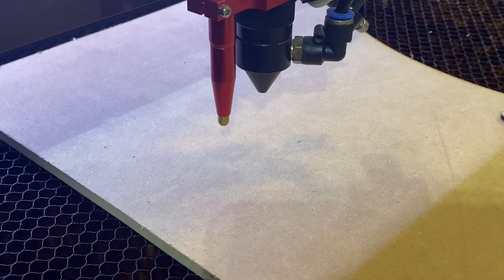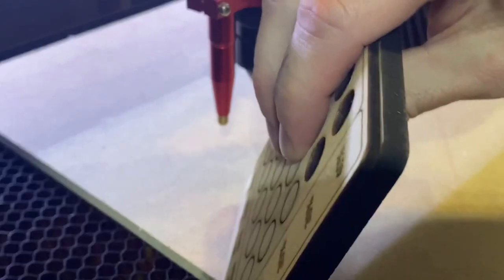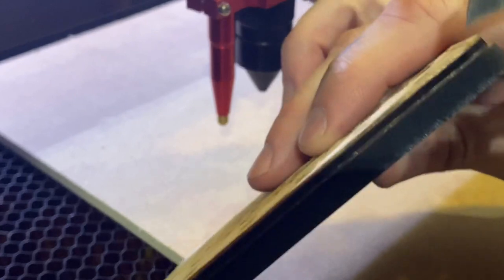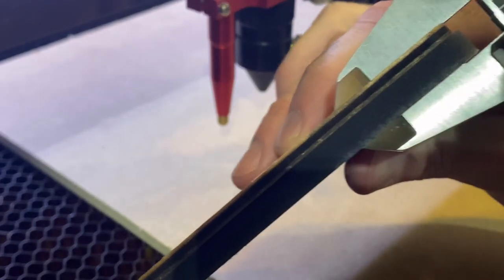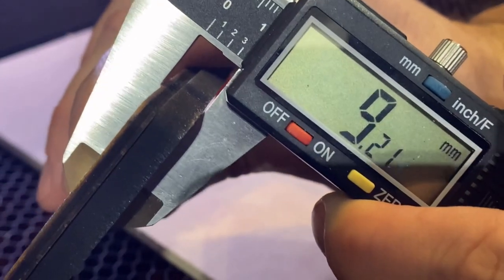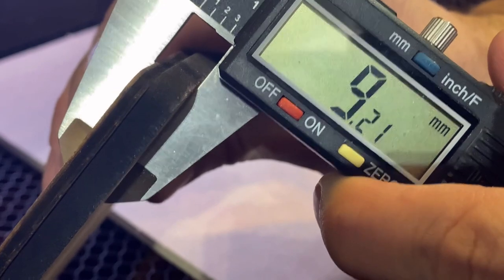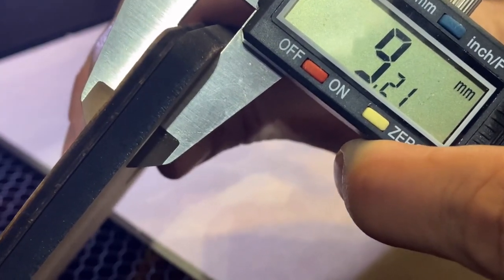To start off, I'm just going to make sure that you guys see that this scrap material here is actually 9mm. So hopefully you can see there, it's 9.21 is what I'm getting right there. So that's the offset ultimately we're going to create by doing this.